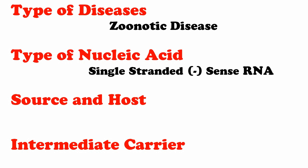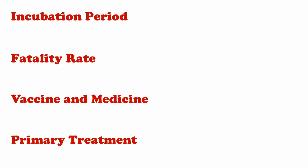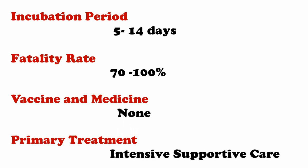The source and host of this virus is fruit bats, and the intermediate carrier is the infected pig. The incubation period — from the day of infection to the manifestation of symptoms — is about 5 to 14 days, and it has a high fatality rate of about 70 to 100 percent. Till now there is no vaccination or medicine known against this virus, and the primary treatment is intensive supportive care — nothing more than that.